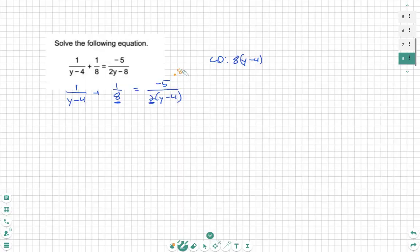Then we're going to multiply that to each term. 8 times y minus 4 times each fraction. So I'm going to rewrite on the next step just so it's a little more clear. 1 over y minus 4, and then up here we have times 8 times y minus 4.